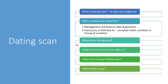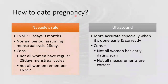The dating scan should be done as early as possible. Conventionally, we use Naegele's rules: take your LNMP and add seven days and nine months, provided the patient has a normal regular cycle. The cons are that not all women have a regular 28-day menstrual cycle, and not all women remember when their last normal menstrual period was. Ultrasound is actually more accurate, especially when done correctly and early, but not all women have an early dating scan and not all measurements are correct.